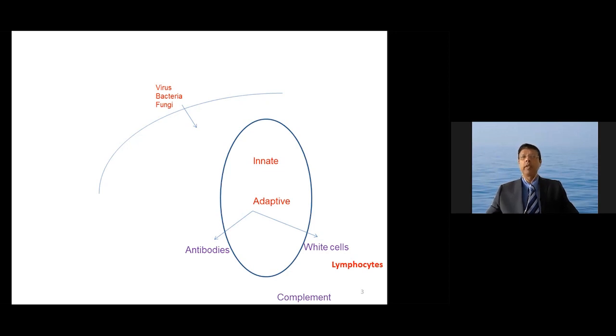You have the innate immune system, which is the first part of the immune system, and the adaptive immune system, which consists of antibodies, lymphocytes as part of white cells, and another component called complement.